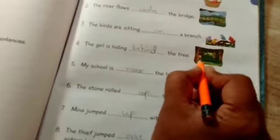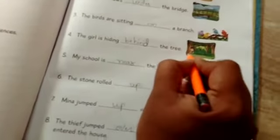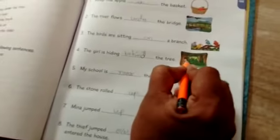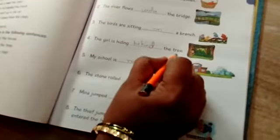Third one, the birds are sitting. So it is on a branch. The girl is hiding. Under the tree? Behind the tree.